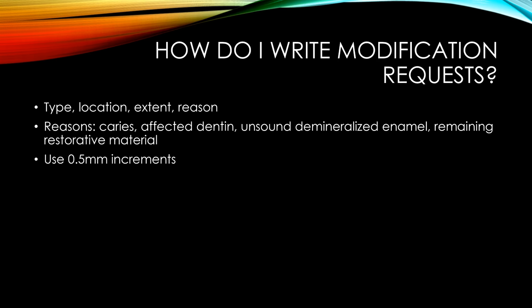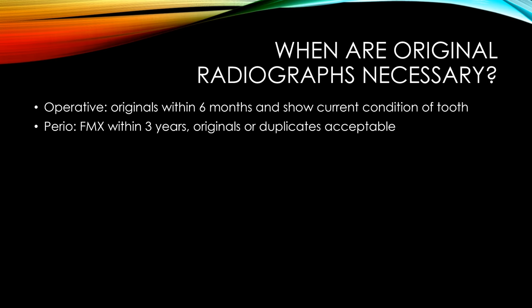How do you write modification requests? Write the type, location, extent, and reason. The four valid reasons are: caries, affected dentin, unsound demineralized enamel, and remaining restorative material. Modifications can be requested in 0.5 millimeter increments. When are original radiographs necessary? For operative, you need original radiographs from within six months to show the current condition of the teeth — if there are any new fillings, you need new x-rays. For perio, an FMX within three years is required, and it can be original or duplicates.